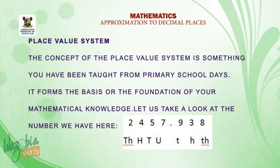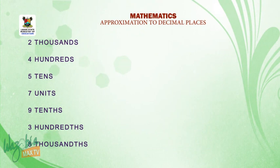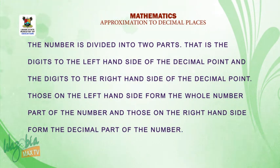The number is 2457.938. Every digit in this number has its own place value as highlighted below. The number is divided into two parts: the digits to the left hand side of the decimal point and the digits to the right hand side of the decimal point.